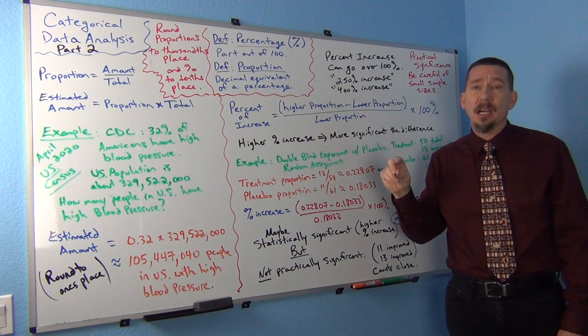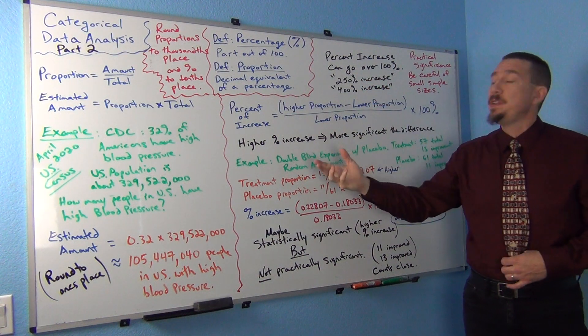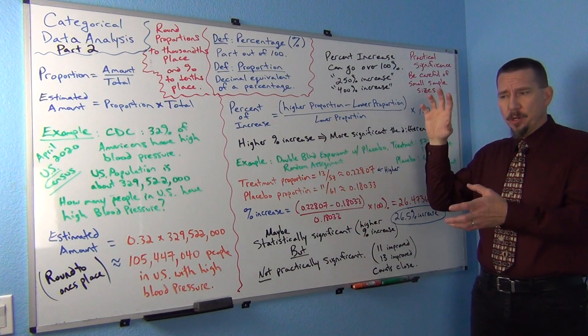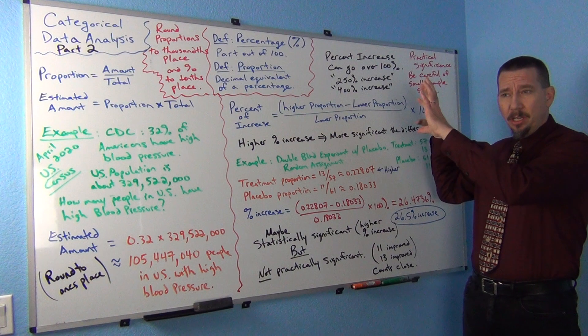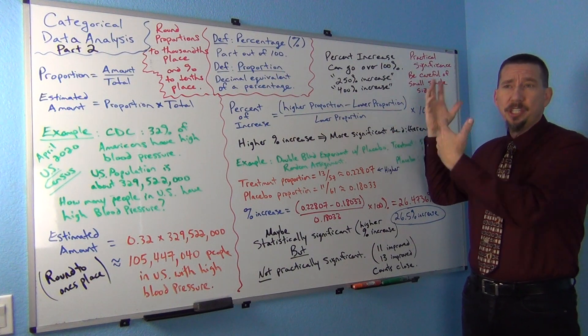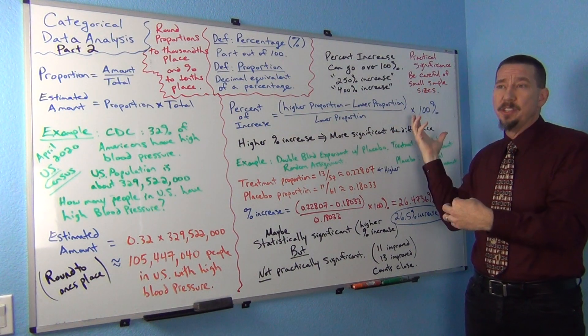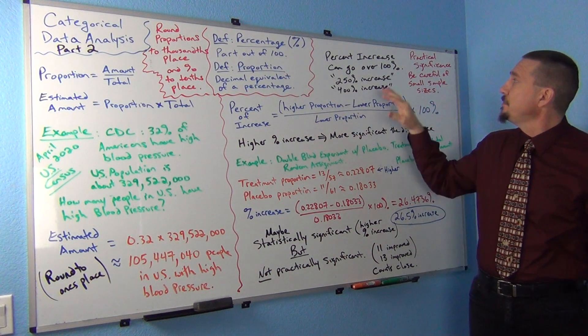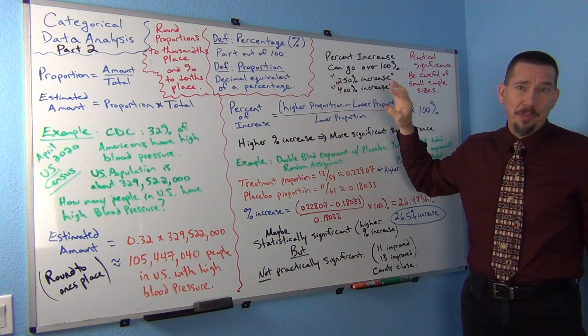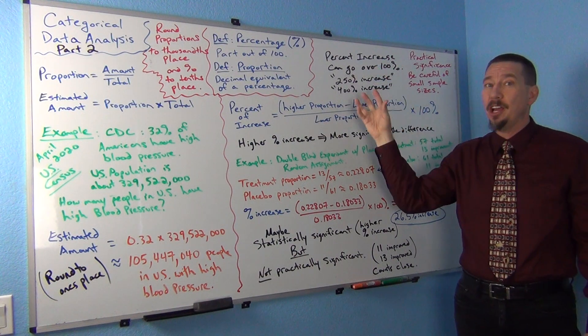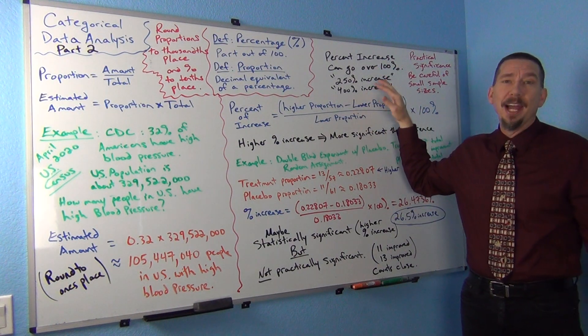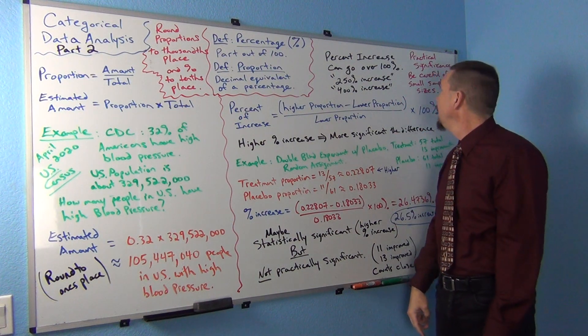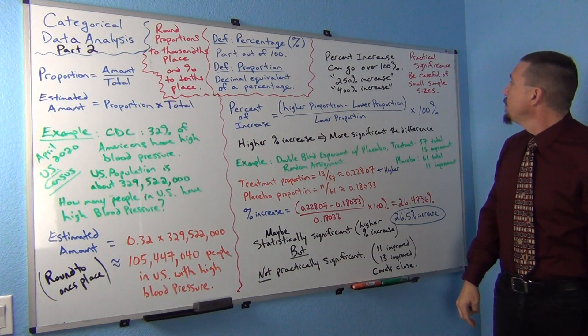One of the key things about percent of increase is that it can go over 100%. So it's not uncommon to see a 250% increase or a 400% increase. Usually if your higher proportion is double the lower proportion, you'll have a 100% increase. If it's triple, it'll be 200% increase and so on. So you can definitely have over 100%. So don't think when you're calculating these if you get over 100% you did something wrong. You probably did it right. It's just that that means it's a really significant difference between the groups.